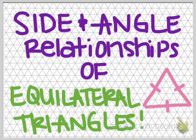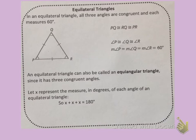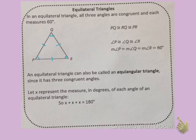Side and angle relationships of equilateral triangles. In an equilateral triangle, all three angles are congruent and each measures 60 degrees. All equilateral triangles have sides that are the same length, which means they're all congruent. That's why we see a tick mark on each of the three sides of an equilateral triangle — to tell us that they are each congruent to each other. As a result, all of the angles in an equilateral triangle are congruent as well.